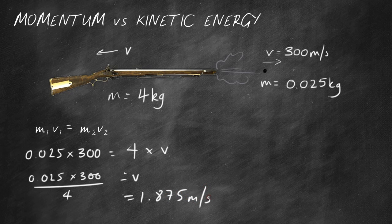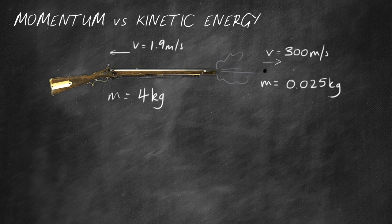Meters per second. So the rifle recoils at near enough 1.9 meters per second, but that doesn't really do you much damage to your shoulder, whereas if the bullet was to hit you in that same shoulder then it would actually do a lot of damage to that shoulder. It would rip that shoulder apart.